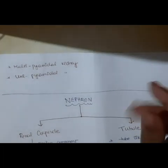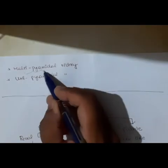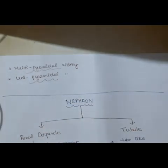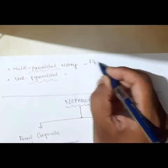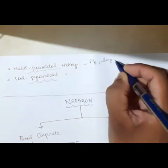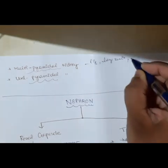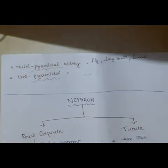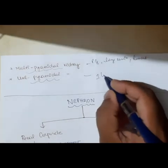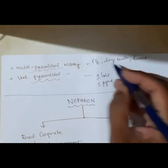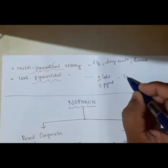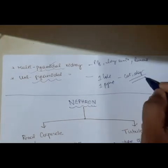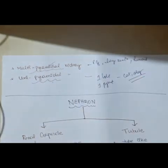Kidneys can be classified into two types: multi-pyramidal kidneys and uni-pyramidal kidneys. The multi-pyramidal kidney has multiple lobes and pyramids inside — it is seen in pigs, large ruminants, and also in humans. The uni-pyramidal kidney has only one lobe and one pyramid. Cats and dogs are the best examples of uni-pyramidal kidneys.